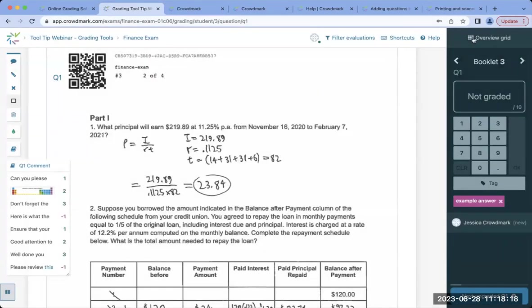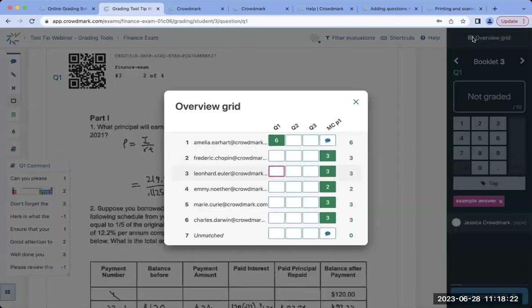We also have an overview grid here as well. This allows you to quickly jump to different booklets or questions. You simply select the box. So if I want to move to Marie's question number two, I can select this empty box here, and then I'll be quickly brought to that specific page.